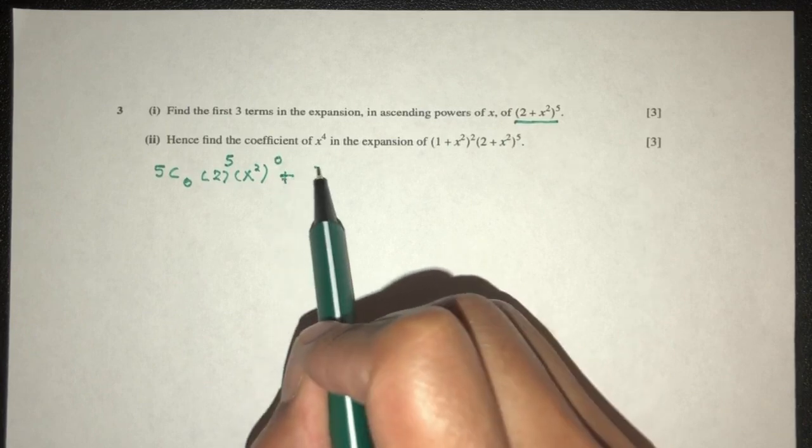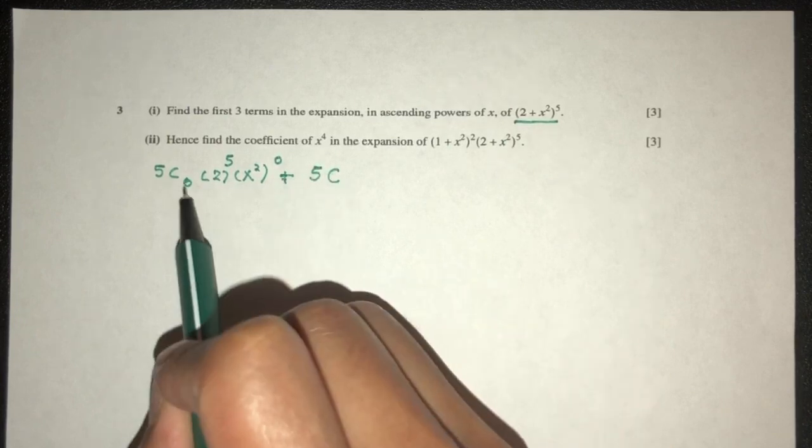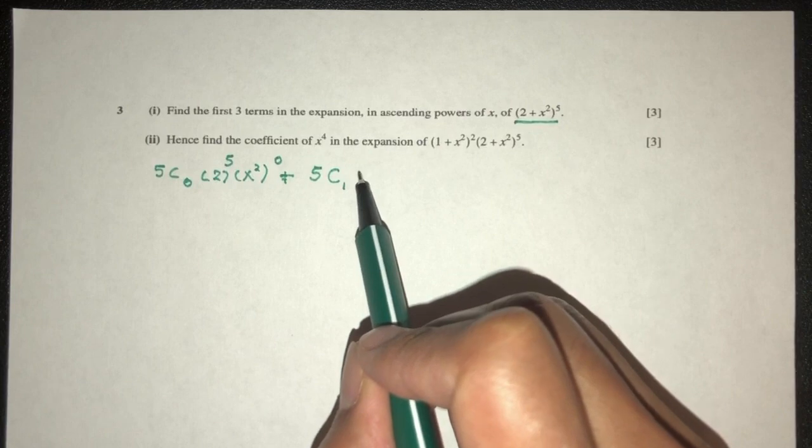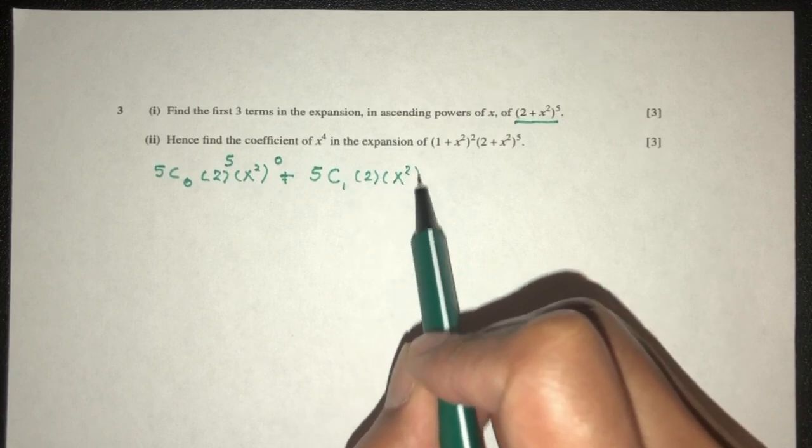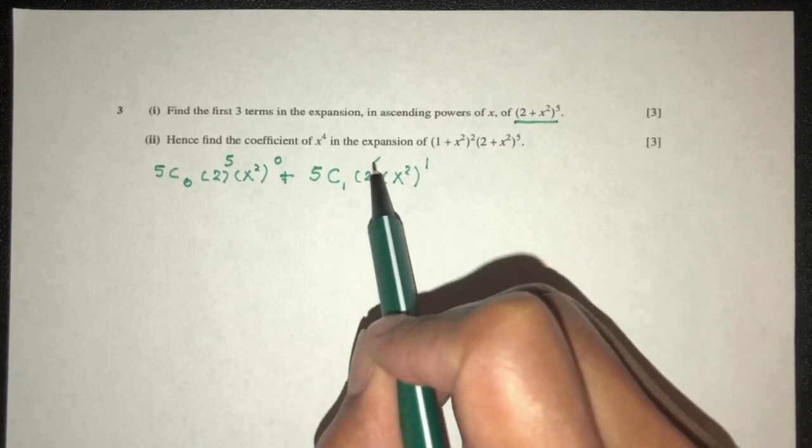Next term will be plus 5 choose 1, obviously. Then we have 2 here, and then x squared. 1 here, 1, and that will be 4.